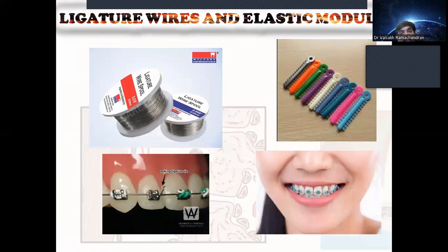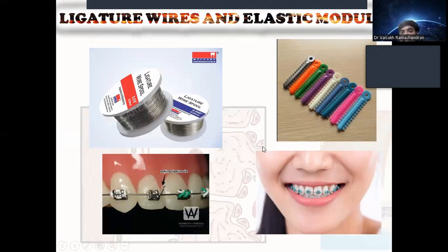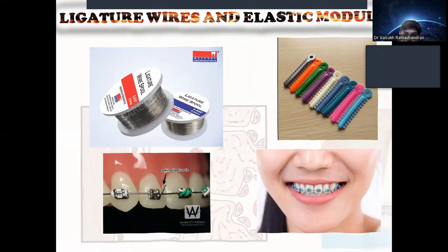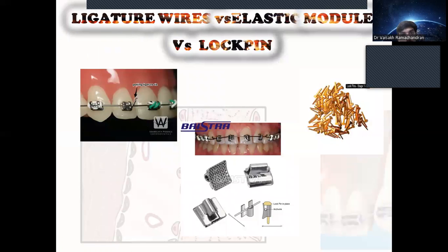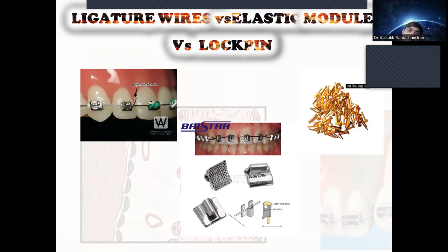Ligature wires and elastic modules are used to hold the arch wire in the bracket slot. The stainless steel ligature wire is twisted around the bracket to secure the wire. In modern practice, plastic elastic modules are used to hold the wire to the brackets. In some treatments, a lock pin can also be used to hold the wire in the bracket slot.